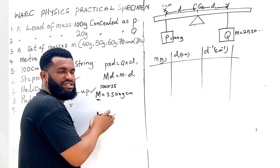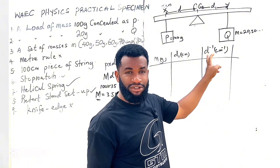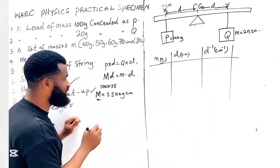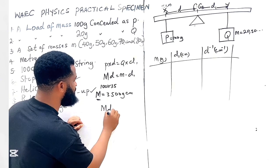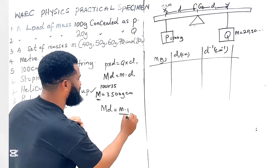So this is what WAEC knows that you must come up with, then they will not ask you to say this. They will not ask you to find d inverse. See what will happen.